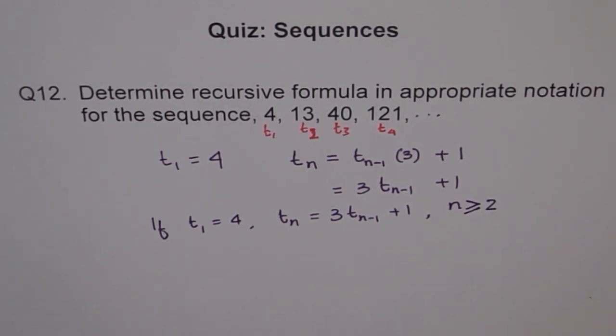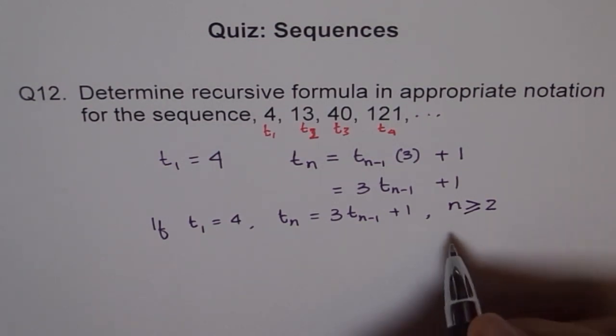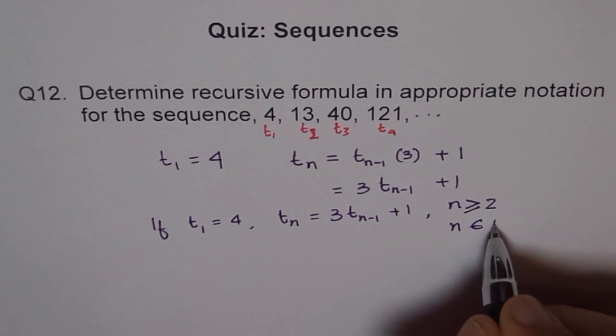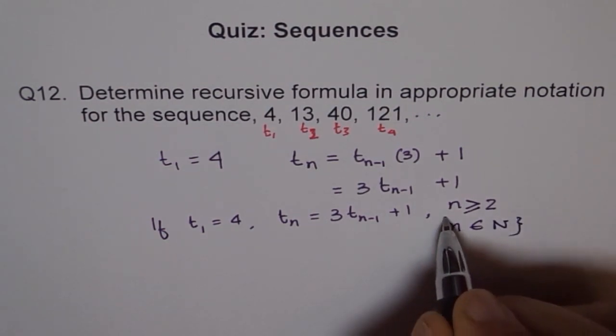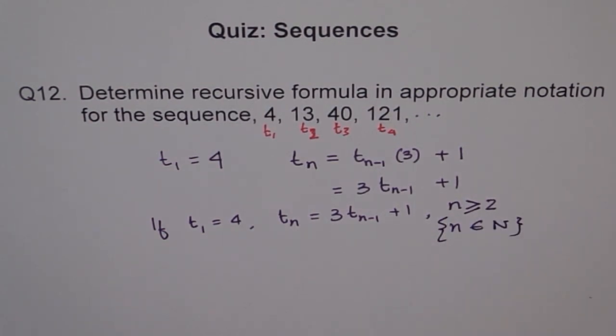It starts from N, all natural numbers. In sequences, we are always dealing with natural numbers. So we say N belongs to set of natural numbers. That is understood for sequences.